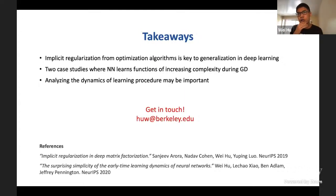So to conclude, I argue that the implicit regularization effect from the optimization algorithms is key to understanding the generalization behavior in modern deep learning. I presented two case studies where we are able to show exactly how neural network learns functions of increasing complexity during the course of gradient descent. These examples also show that perhaps analyzing the dynamics of the learning procedure may be important to understand or even just to describe the implicit regularization effect in deep learning.